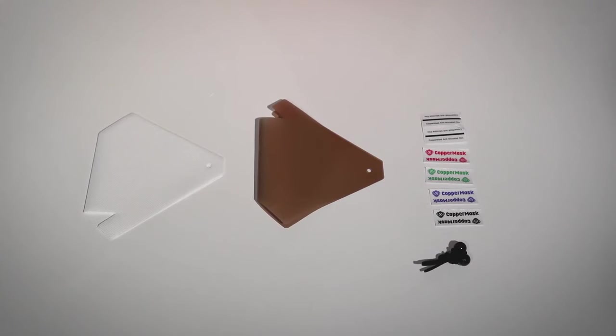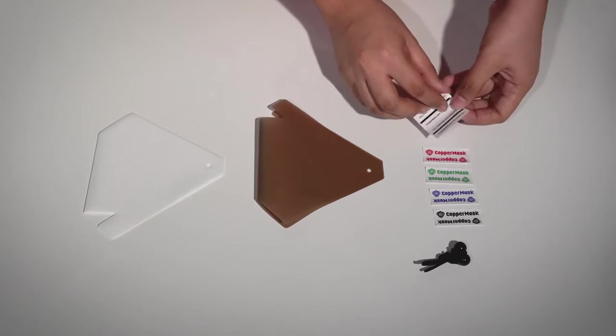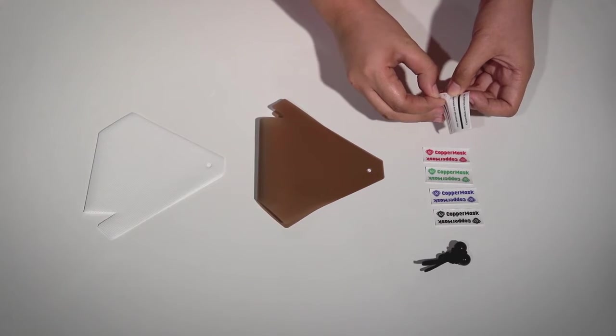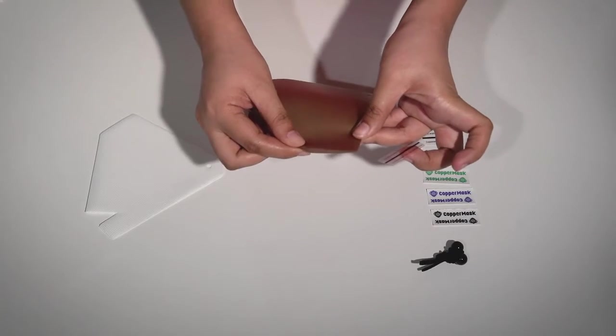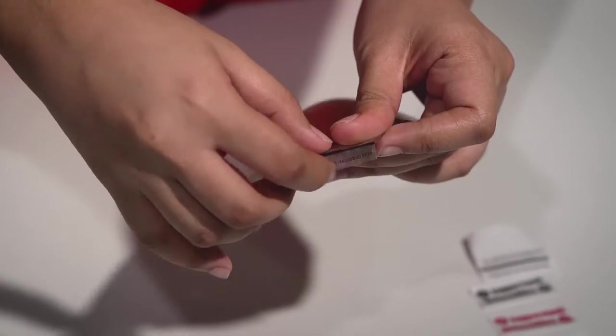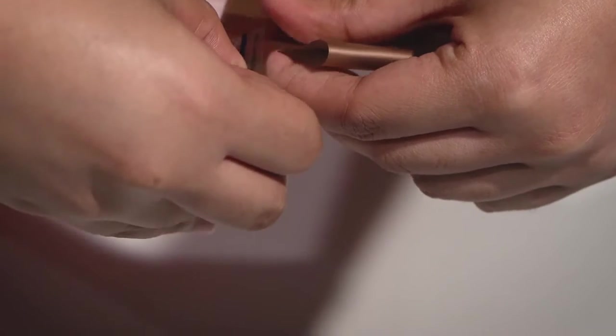Now, let's assemble it. For our new and improved Copper Mask, we will show you how to put the stickers first. Fold the Copper Mask in half. Make sure it's aligned. Then put the seal sticker on the upper part and also on the bottom part.